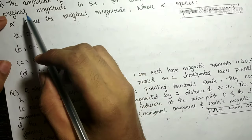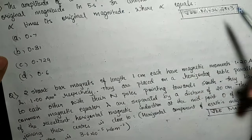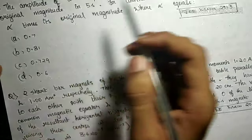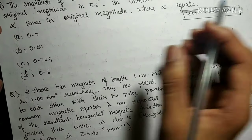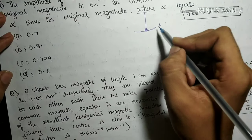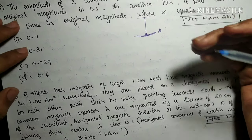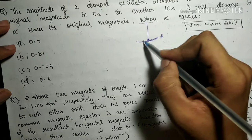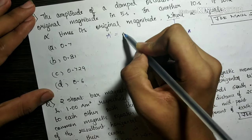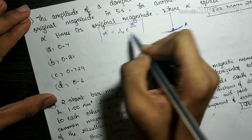The next question says: the amplitude of a damped oscillator decreases to 0.9 times its original magnitude in 5 seconds. In another 10 seconds it will decrease to α times the original magnitude — find α. In a damped oscillator the amplitude keeps decreasing due to resistive forces. The formula is A = A₀×e^(−bt/2m).